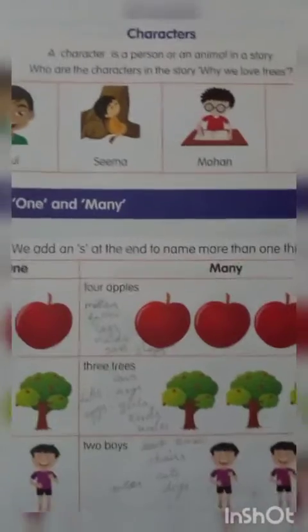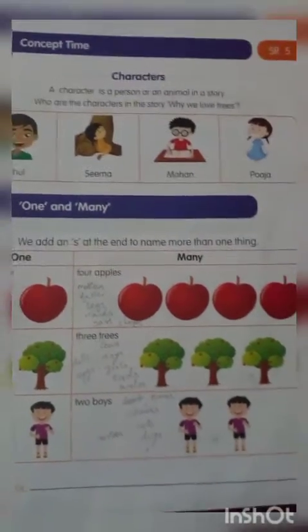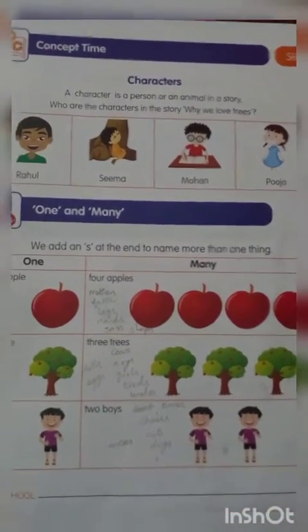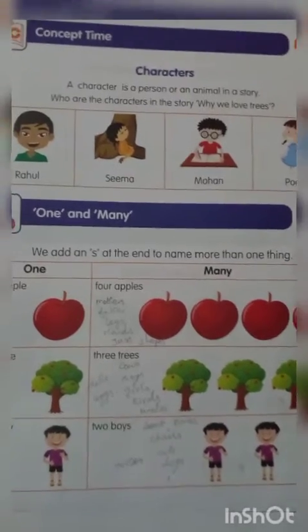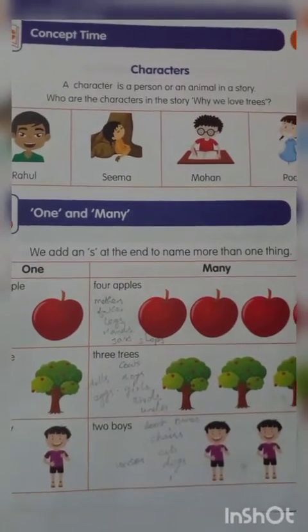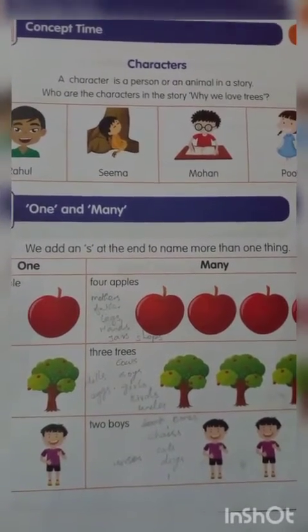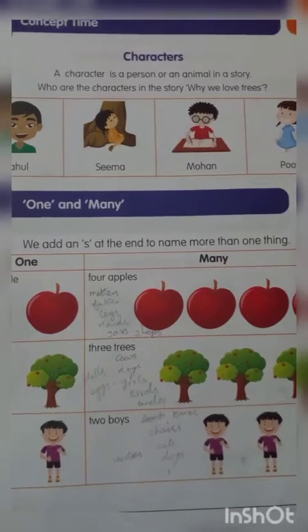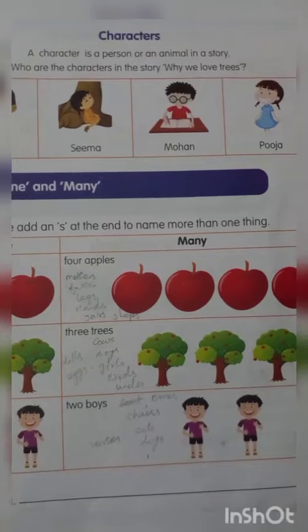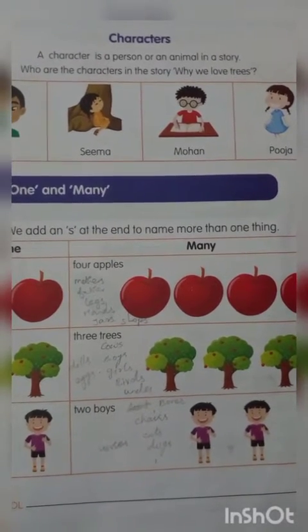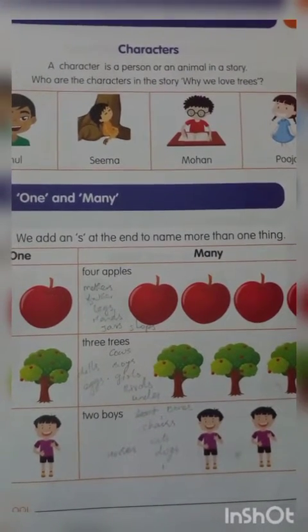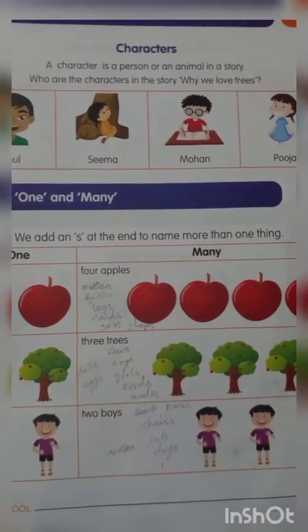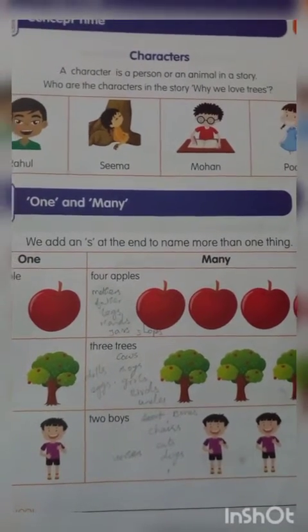In concept time, we learned about characters. What is a character? A character is a person or animal in a story. The characters in our story include a lot of children — Rahul, Seema, Mohan, Puja. So, a character is nothing but a person or an animal in a story.